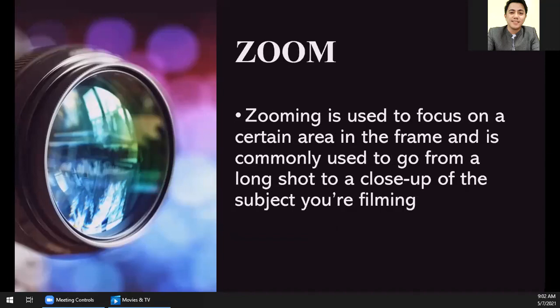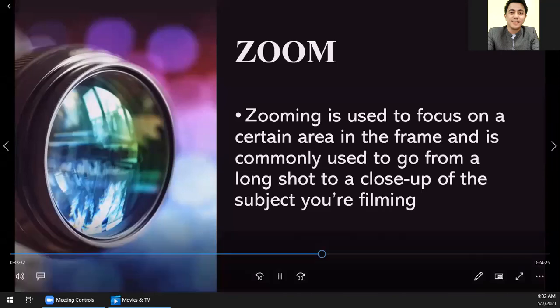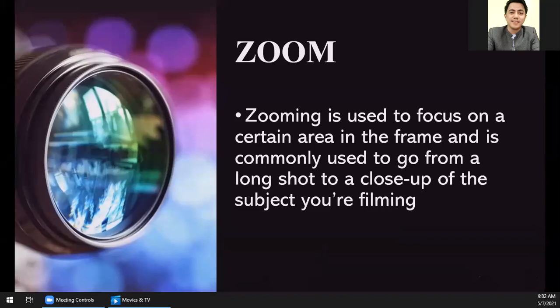Next, zoom. This is actually a camera technique rather than a camera movement. When you zoom, you can see it in the features of your mobile phone — you zoom the camera lens to get closer or farther from the subject. The difference is that when you zoom, you don't move the camera — it stays fixed and only the lens moves. That's why it's a camera technique and not a camera movement. This is used to focus on a certain area in the frame, commonly to go from a long shot to a close-up.